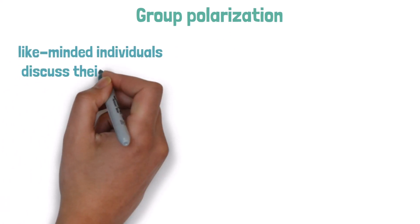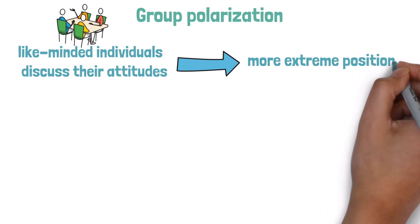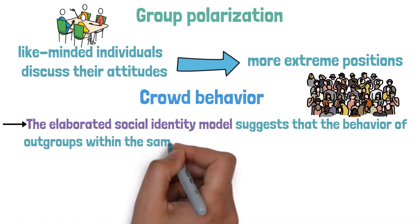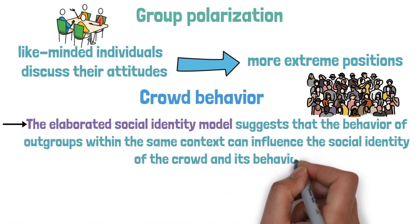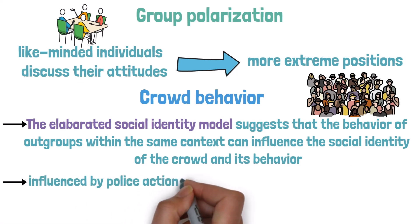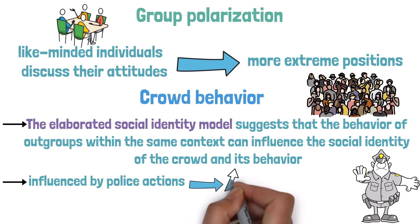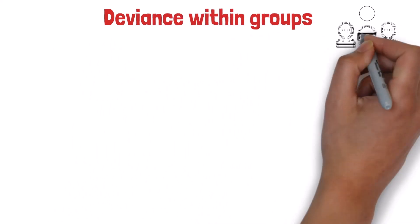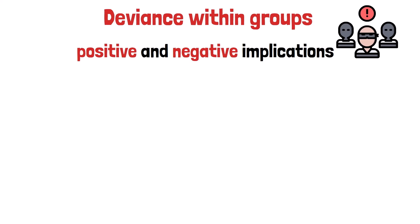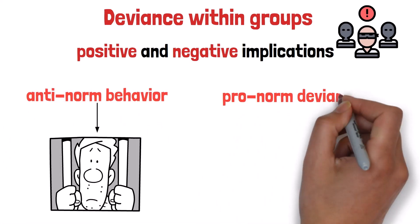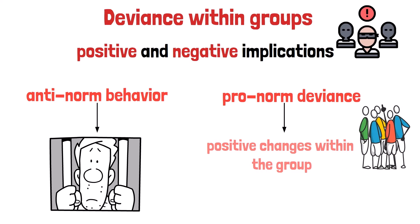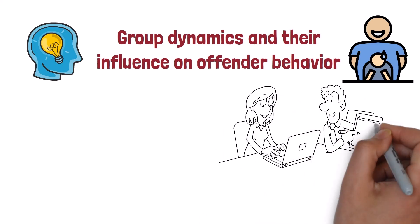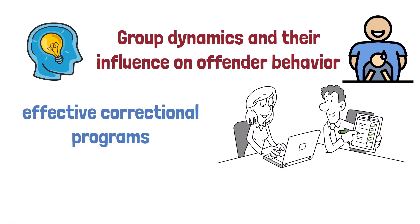Moving on to group polarization: this occurs when like-minded individuals discuss their attitudes, leading to more extreme positions. In the context of crowd behavior, the elaborated social identity model suggests that the behavior of outgroups within the same context can influence a crowd's social identity and behavior. Interestingly, heavy police involvement may lead to increased cohesion and potential violence within the crowd. Deviance within groups can have both positive and negative implications — while anti-norm behavior is typically punished, pro-norm deviance can drive positive changes.